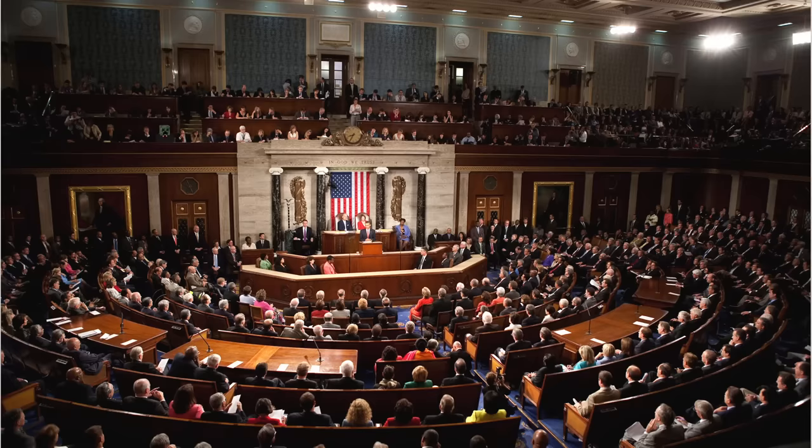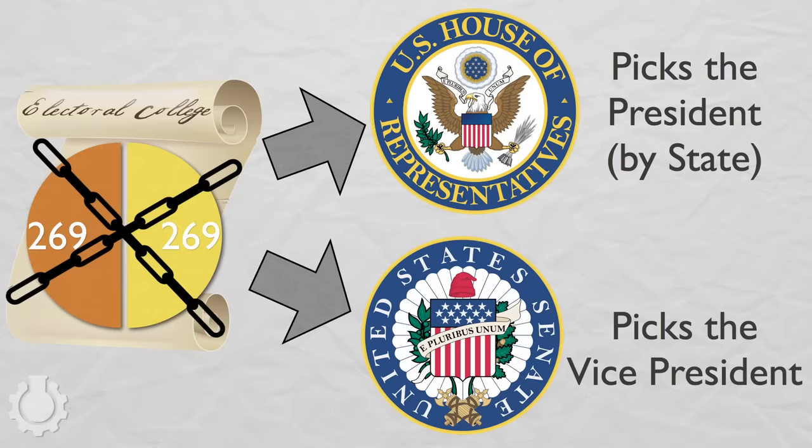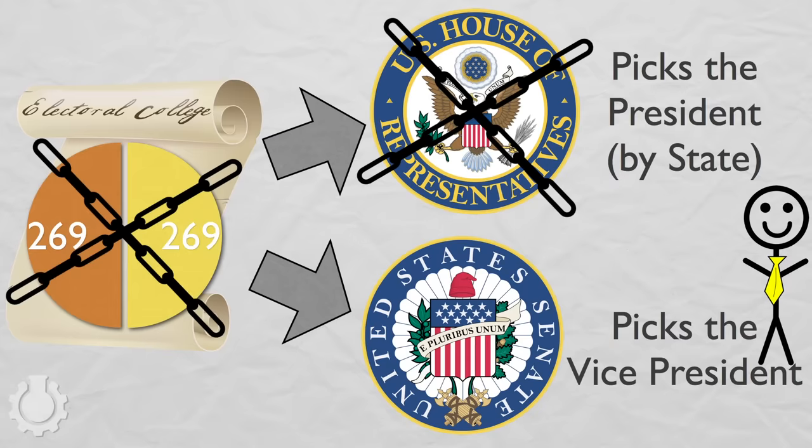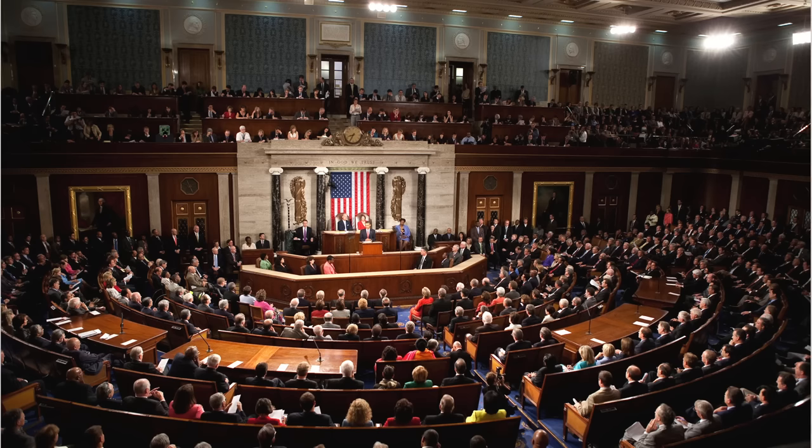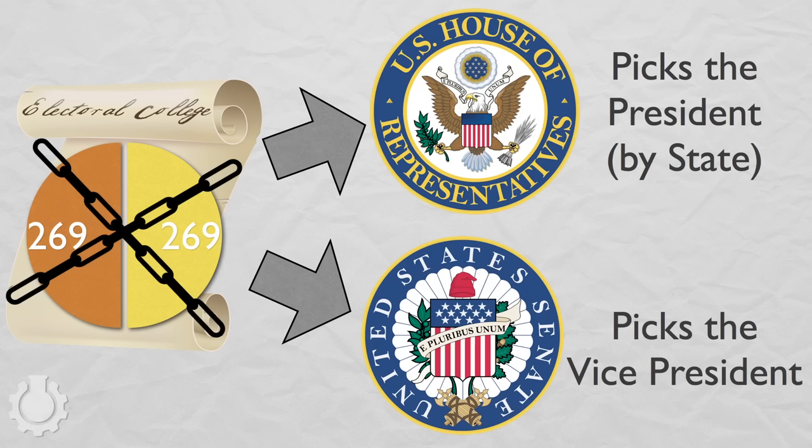But even this crazy system for resolving a tie isn't guaranteed to work, because there are 100 members of the Senate, and in the House of Representatives they're forced to vote as 50 states — and many of those states have 10 or 8 representatives — making the whole system tie-tacular with all those even numbers. So if the House can't pick the president but the Senate has picked the vice president, then the vice president becomes acting president until the House can make up its mind.